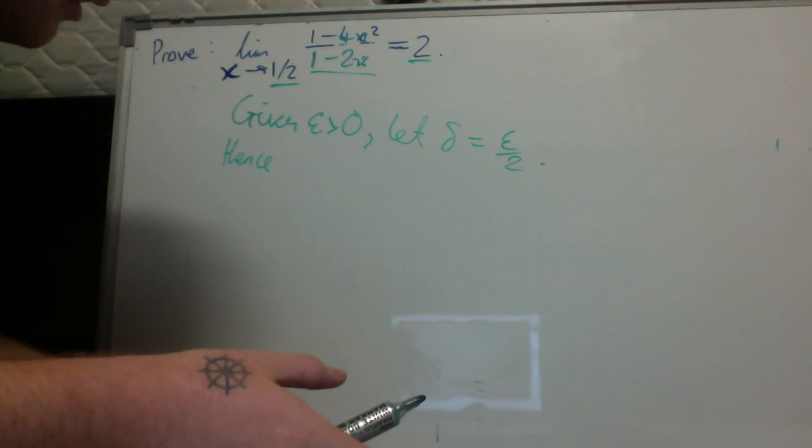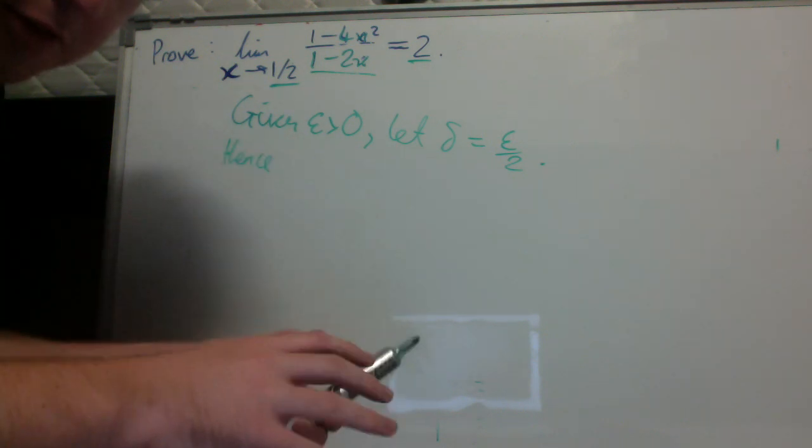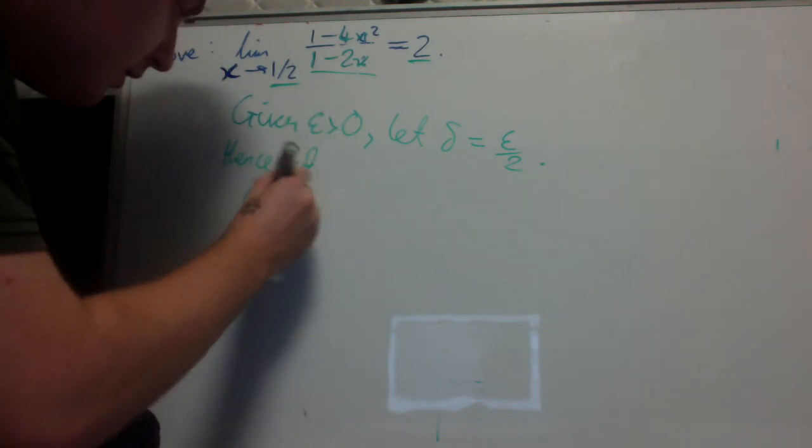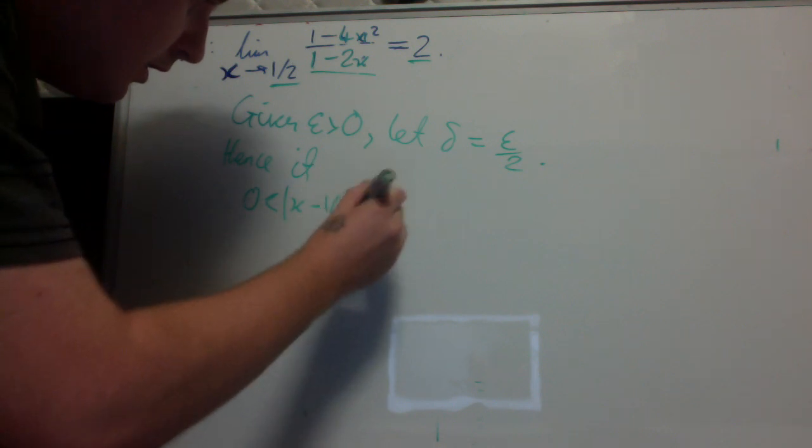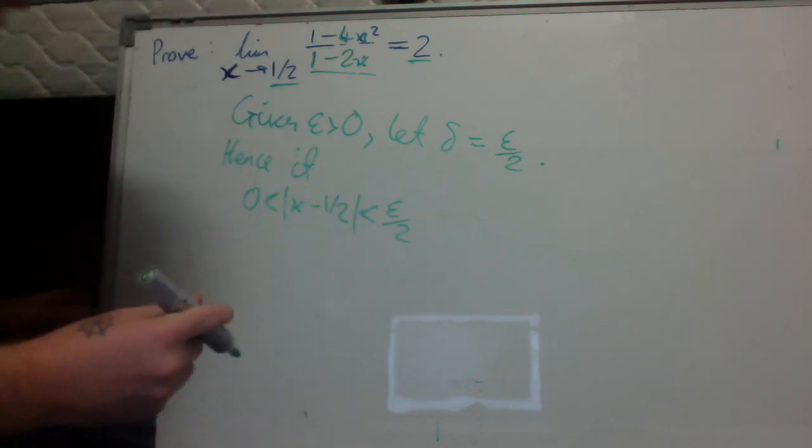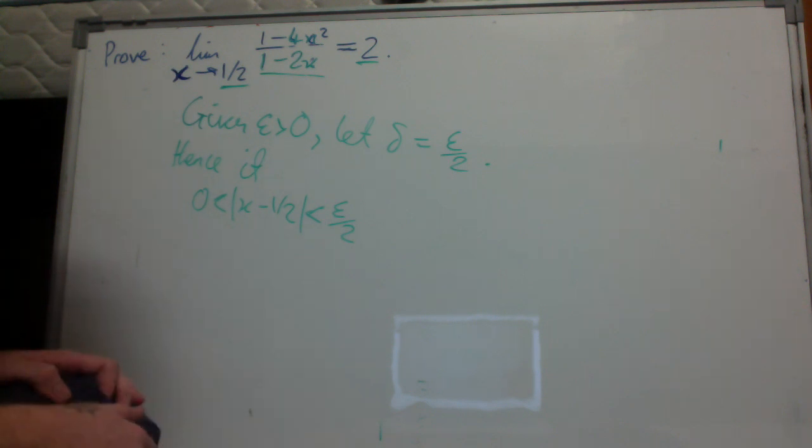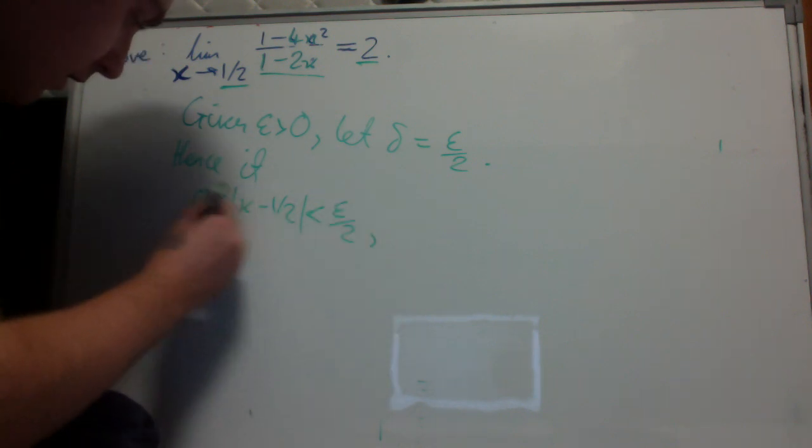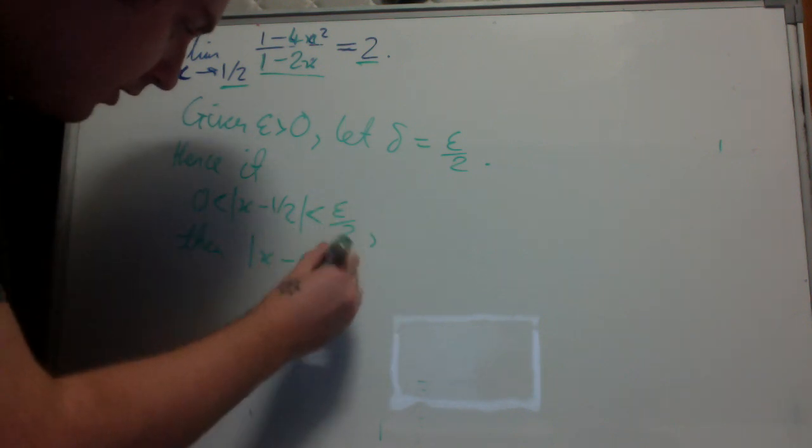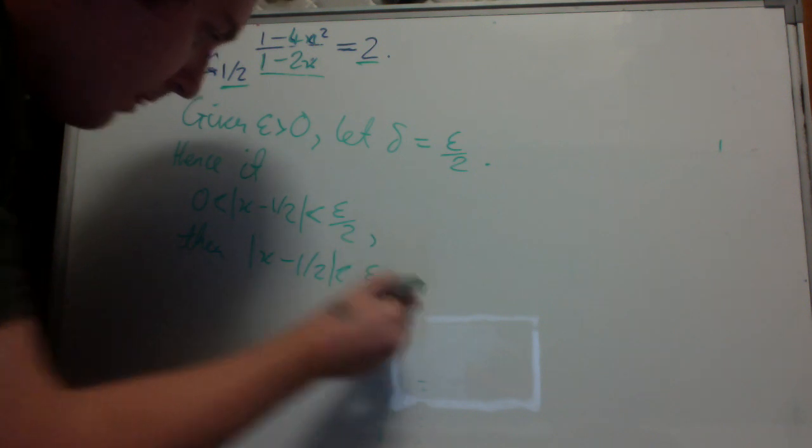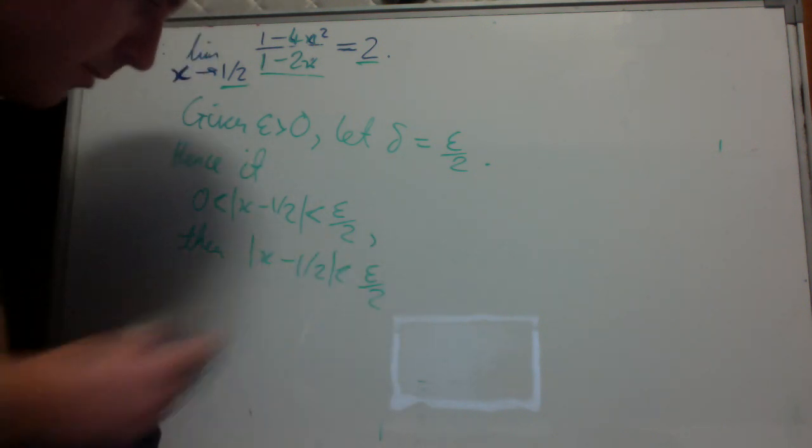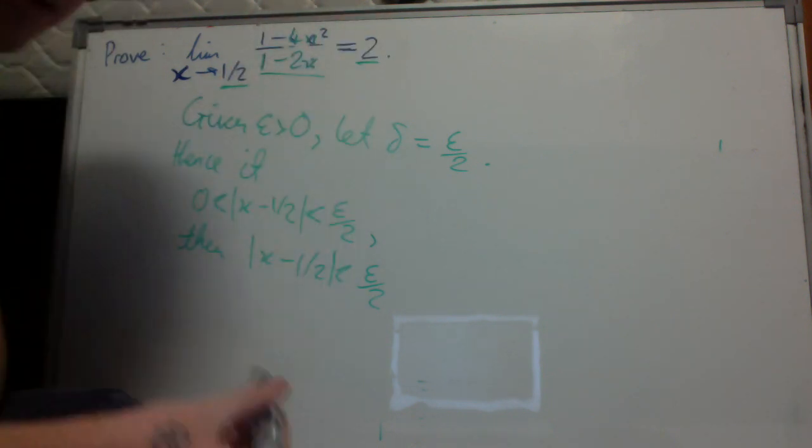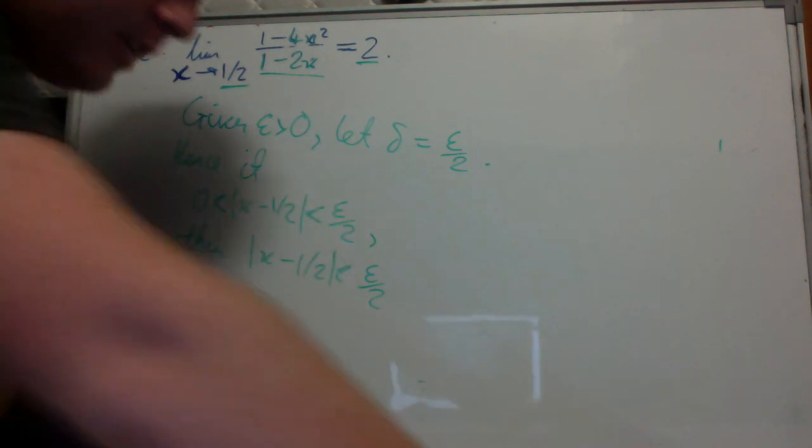We assume the antecedent, the if statement. Hence, if 0 < |x - 1/2| < δ. Let's start manipulating that, and what we're going to do is manipulate it back into being the function minus the limit.